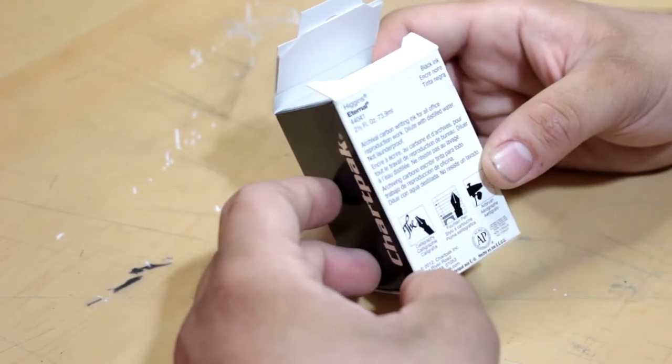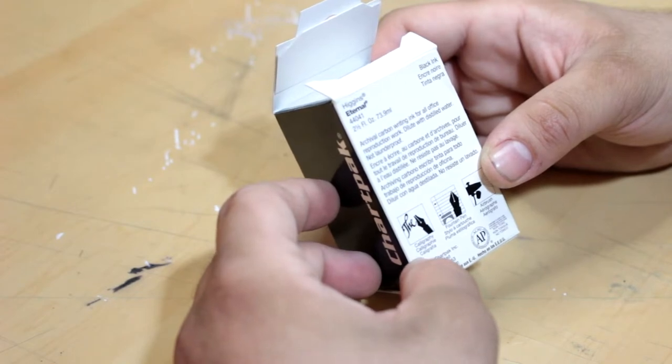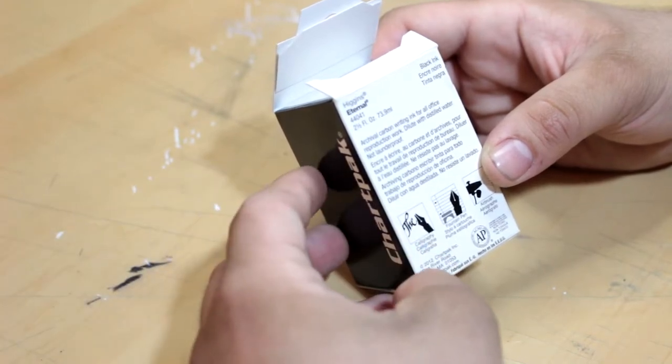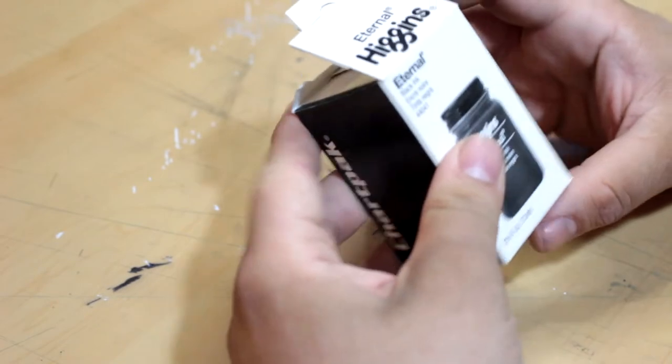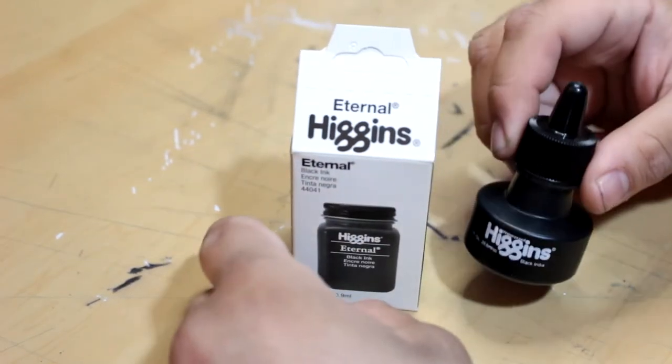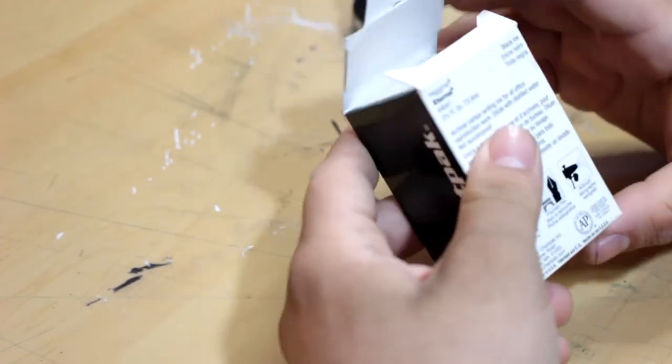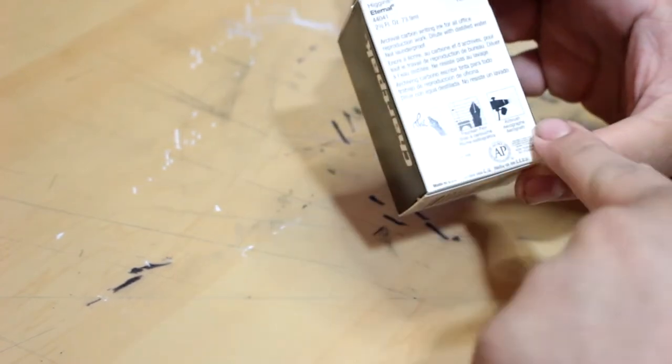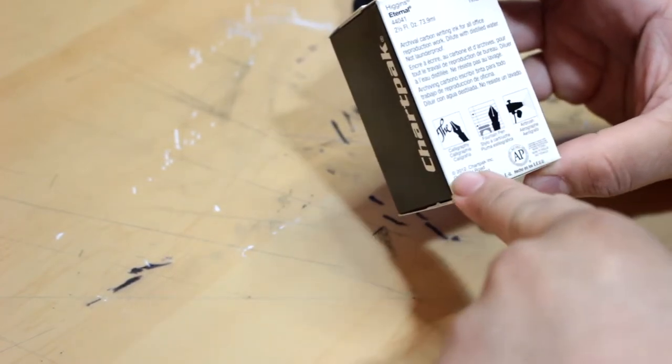So I'm really curious to see what the difference between these two inks are. It mentions how this is an archival carbon writing ink for all official reproduction work. Dilute it with water, not waterproof. So is that the difference between these two inks - this one is not waterproof and this one is?